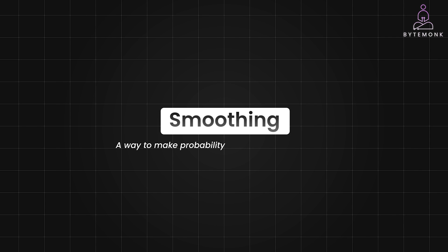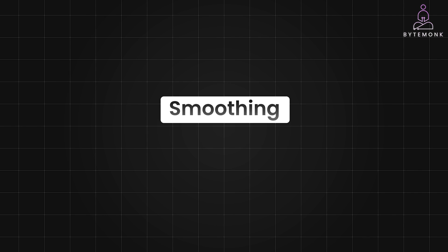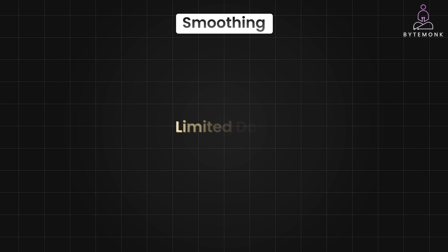Smoothing is a way to make probability estimates more accurate, especially when we don't have much data. It helps prevent the probabilities from being zero when we haven't seen something happen yet. Smoothing is commonly used with limited data — when you have a small amount of data, some events might not occur at all, leading to zero probability estimates. Smoothing helps to assign non-zero probabilities to these unseen events, preventing the model from making overly confident predictions based on the absence of evidence.